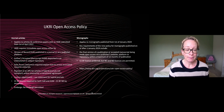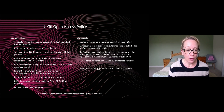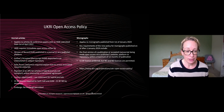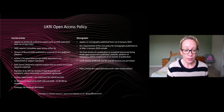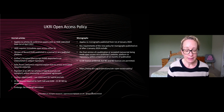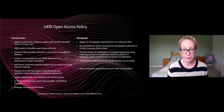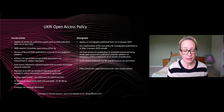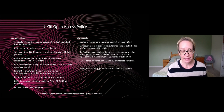UKRI now require immediate open access, either by publishing the version of record in a journal or on a publisher platform. The author's accepted manuscript must also be made open access and deposited in an institutional or subject repository. There are no embargoes allowed — it must be made open access immediately on first online publication, and must be made available under an open license, which should be CC BY or CC BY ND by exception. You will also need to include a data access statement explaining how to access the underlying research data accompanying the article, even if that is to say there is no data available.